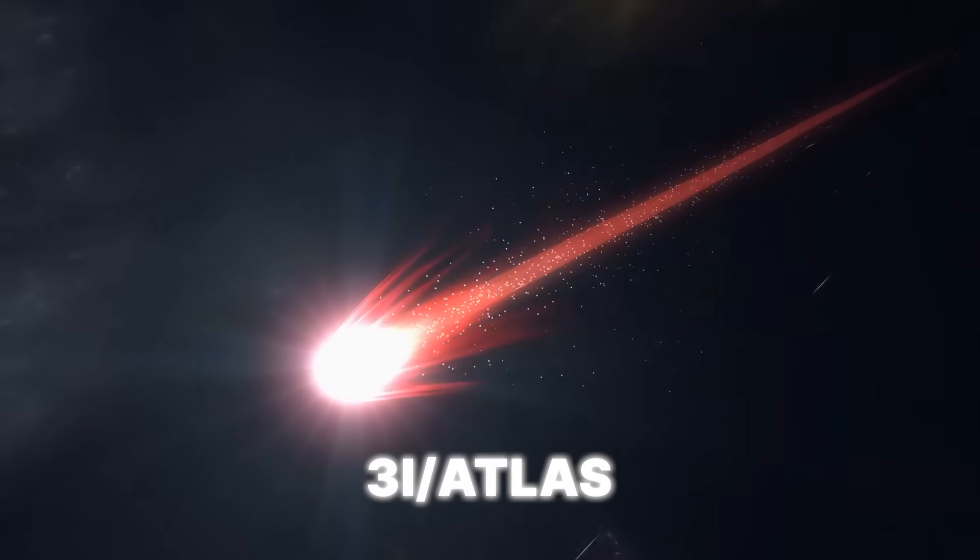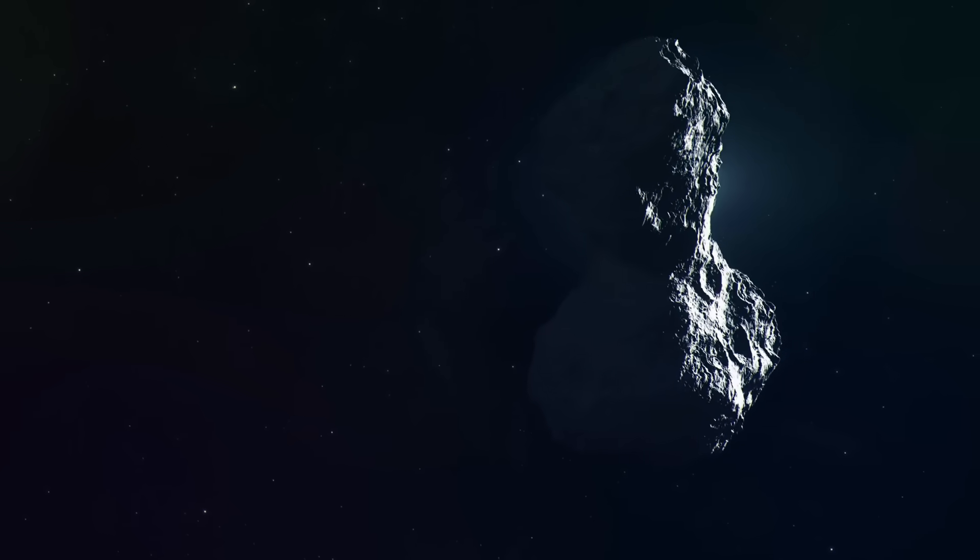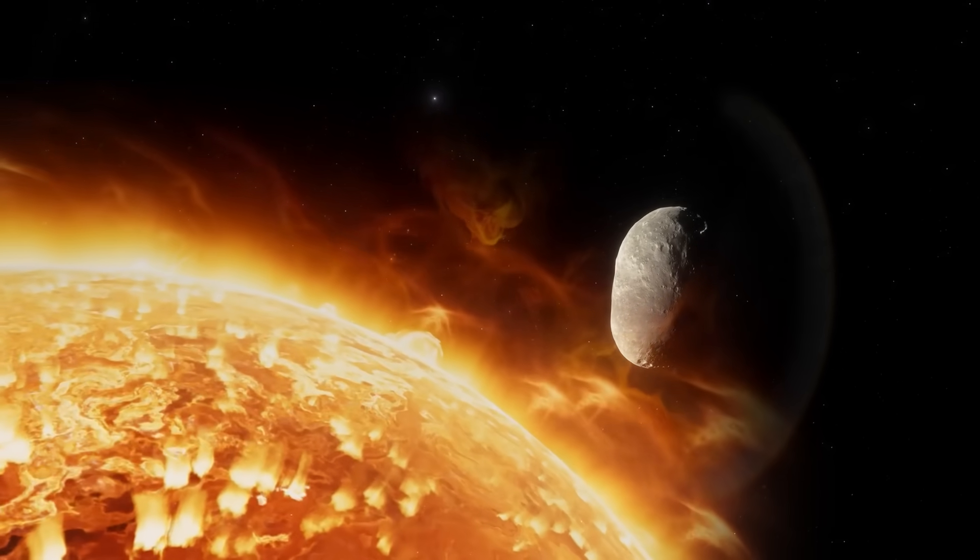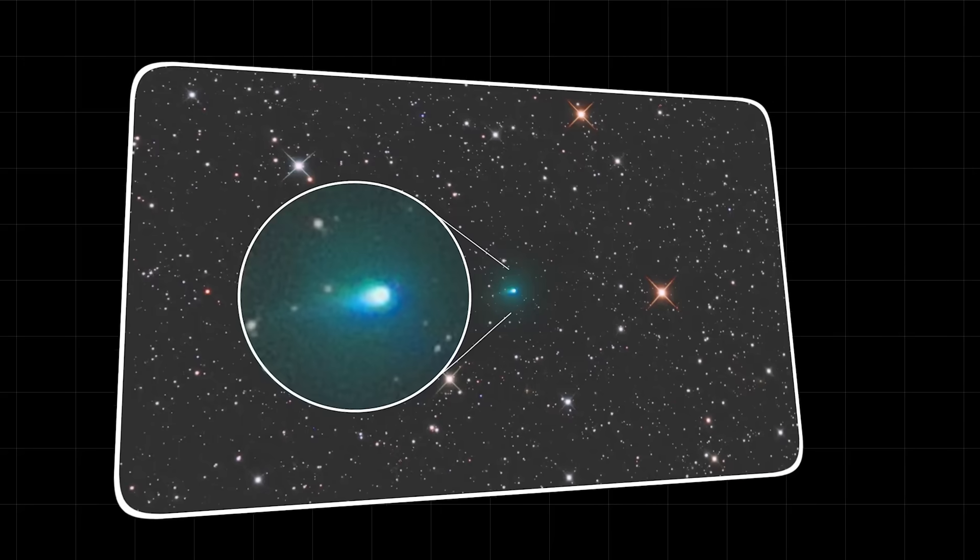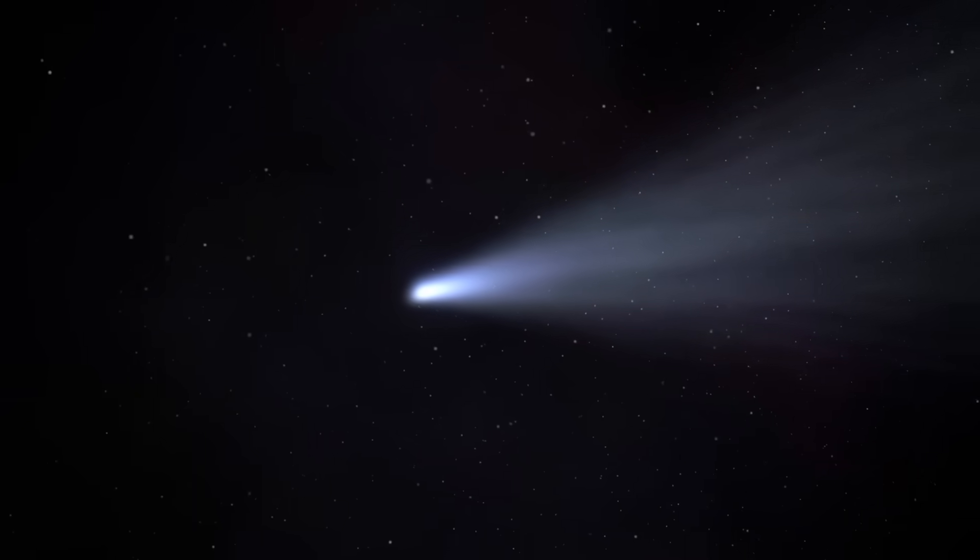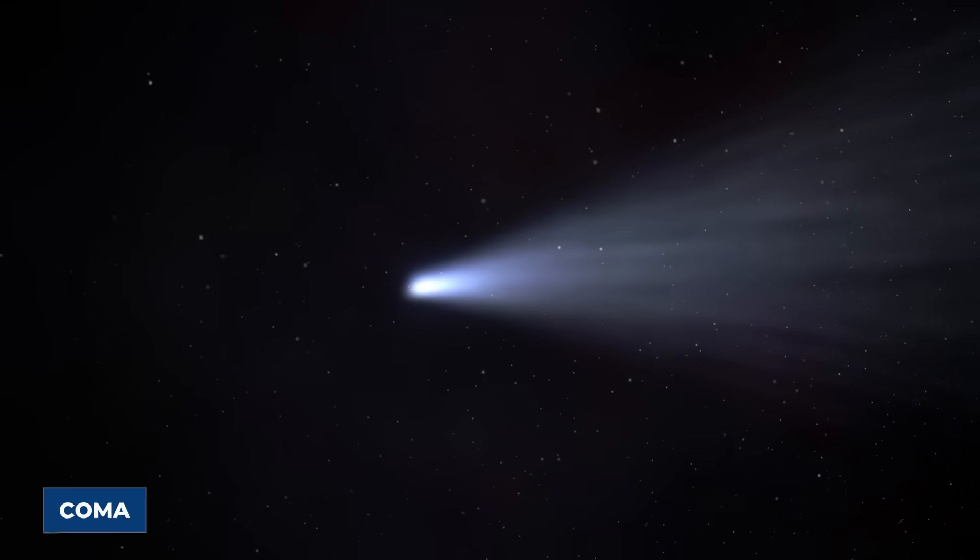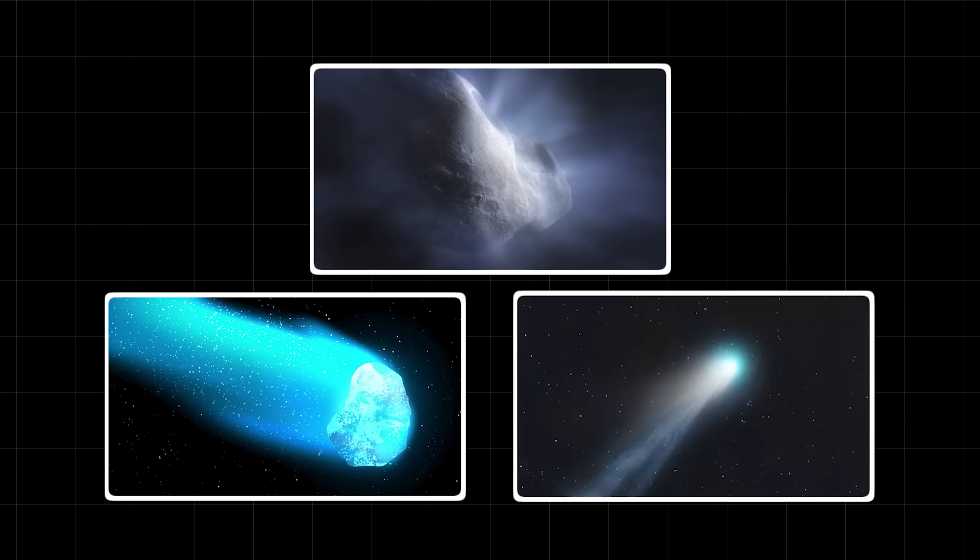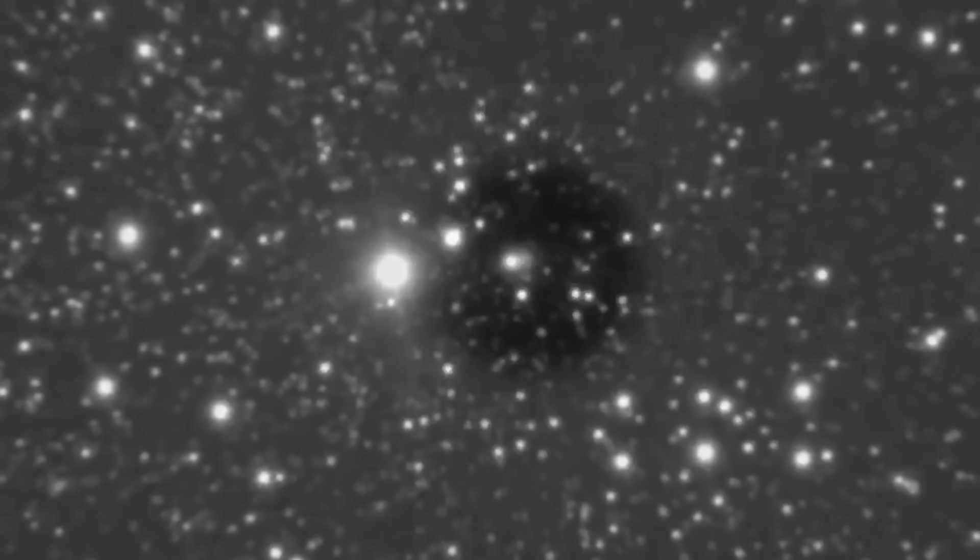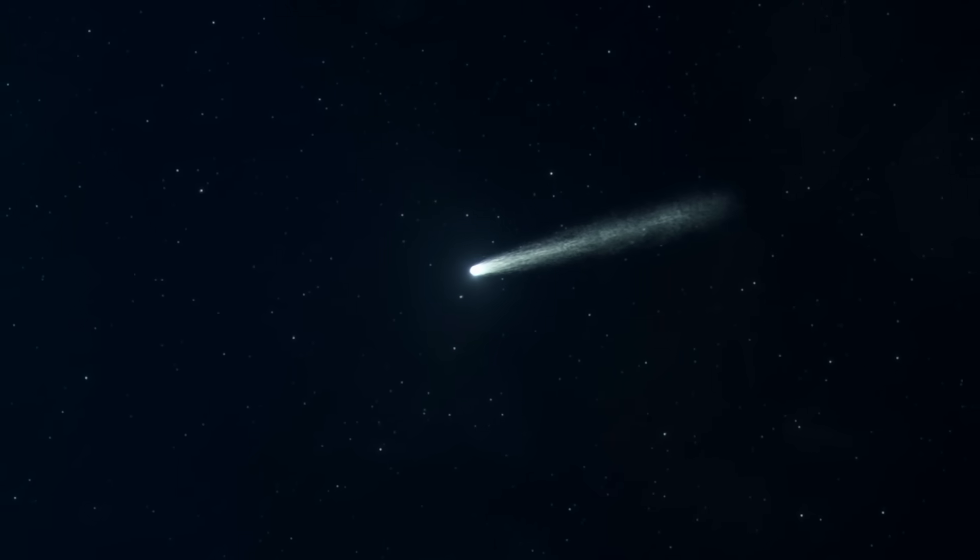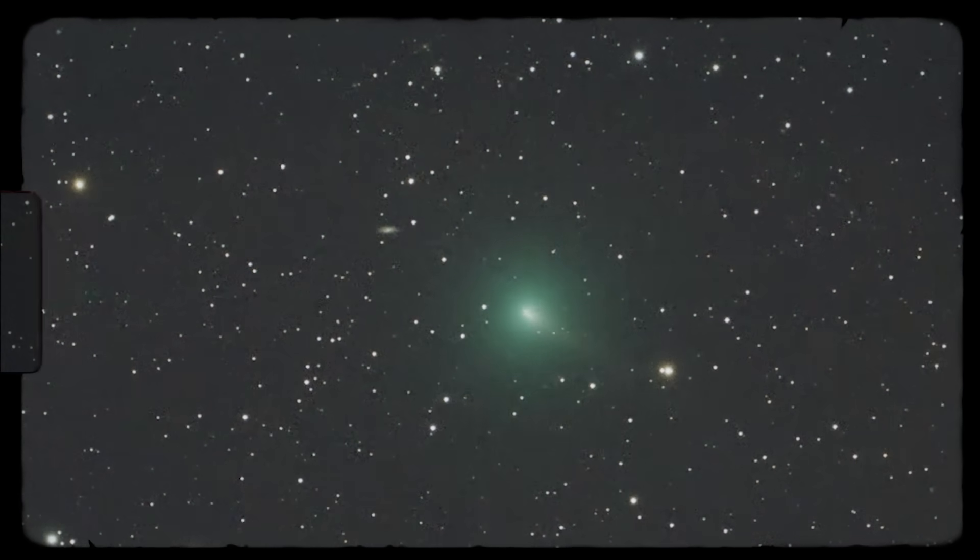Initially, 3I Atlas had a reddish color, which is common for objects that have been traveling through deep space for millions of years. But as it got closer to our sun, something weird happened. It started to glow an eerie, unmistakable green. What many overlooked was the cloud of dust and gas surrounding it, known as a coma. Most comets have a coma made of water, ice, and other elements. The coma of 3I Atlas, however, is mostly made of carbon dioxide. This unusual composition is a massive red flag that we're not dealing with an ordinary comet.